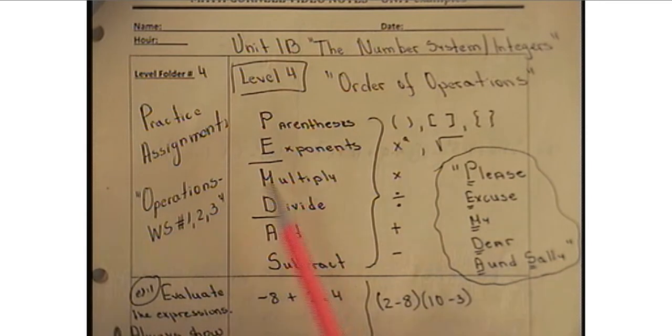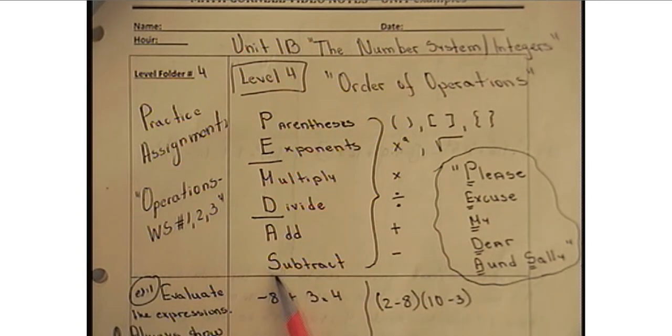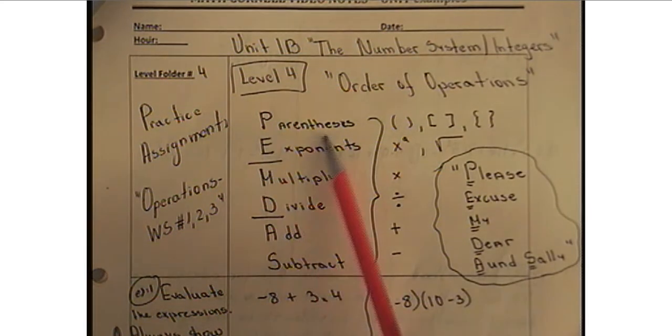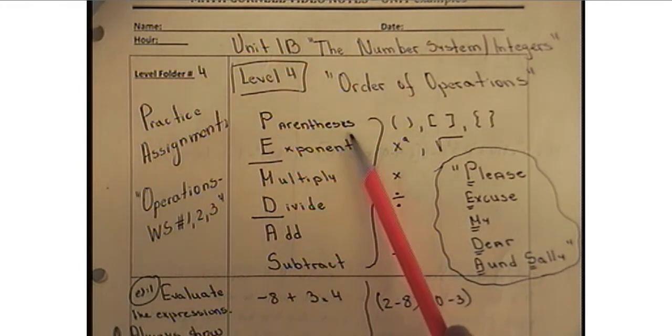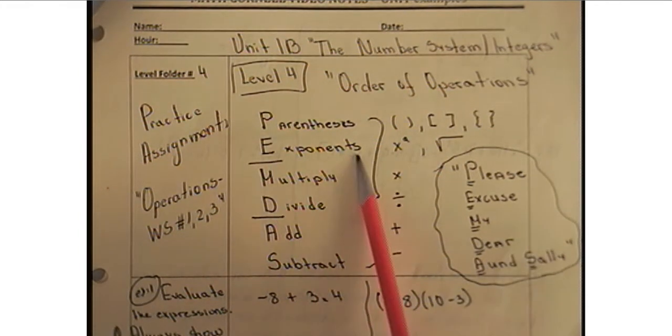One way is to write down PEMDAS in vertical position just like this and write down what each letter stands for. So P stands for parentheses, E stands for exponents, M stands for multiplication or multiply, D for divide or division, A for add or addition and S for subtraction.